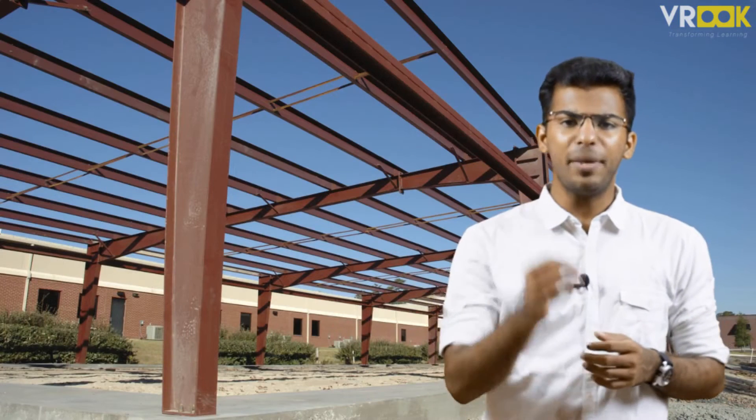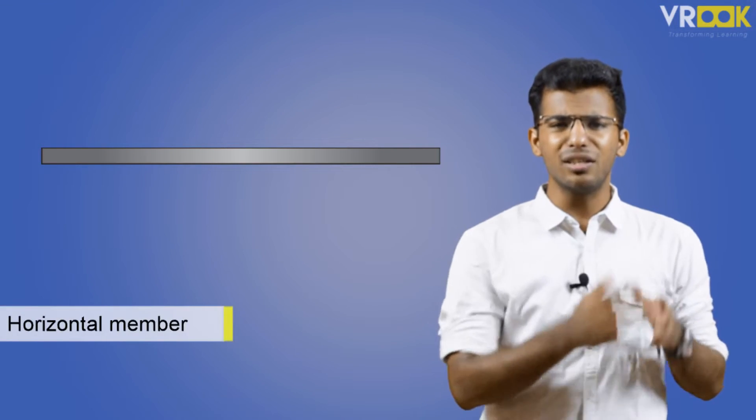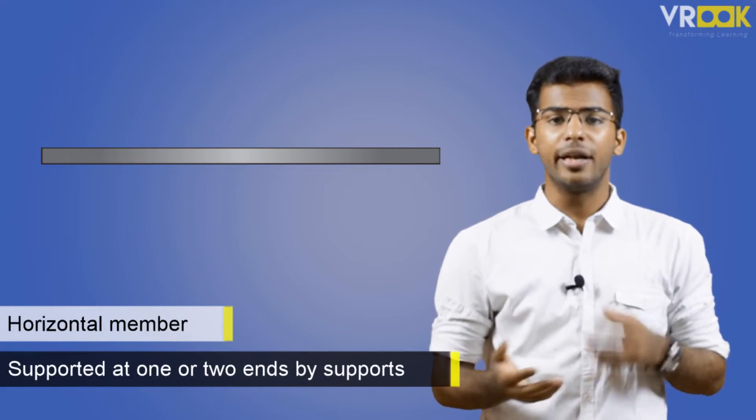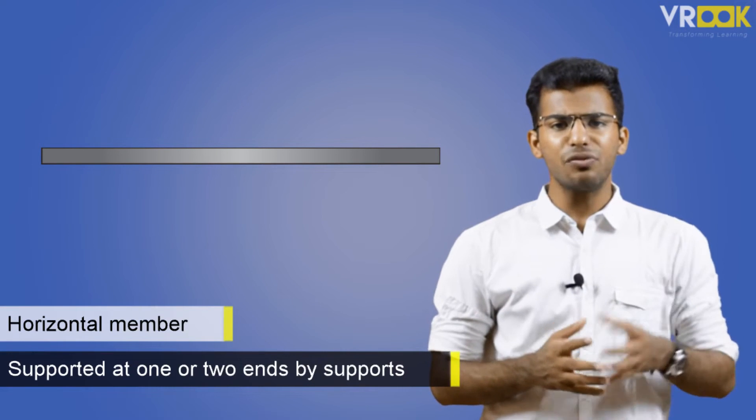Now coming to a beam. A beam is basically a horizontal member with certain geometry which is supported at one or two ends by supports. The purpose of these supports is to hold the beam in position even when a certain external load is acting on the beam.